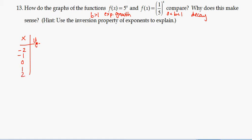So if I took 5 to the x, 5 to the negative 2 is 1 over 5 squared, right? So we're using this inversion property of exponents. So this is 1 over 25.